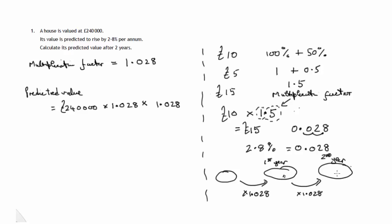So predicted value will be equal to £240,000 times 1.028, that'll get us to this first year value, times another 1.028, will get us to the second year's value. Now there's an even shorter way when we get to our calculator of doing that. If you notice that 1.028 times 1.028 is 1.028 squared.